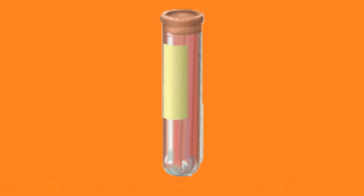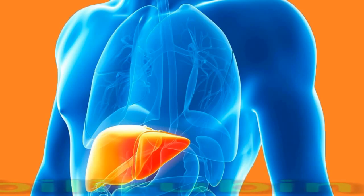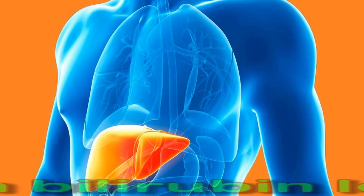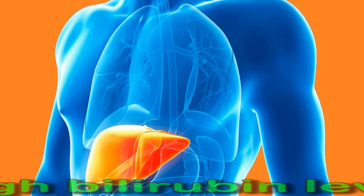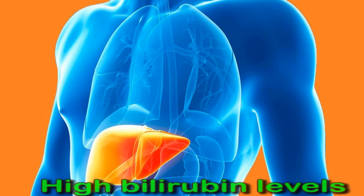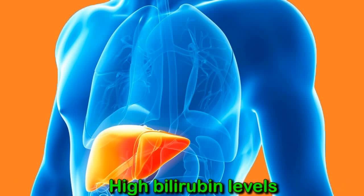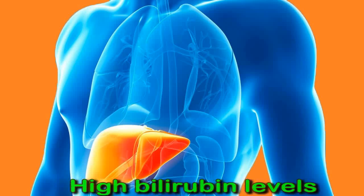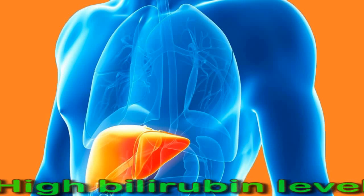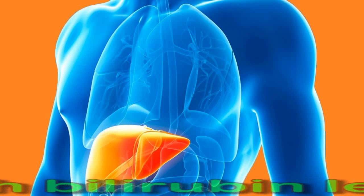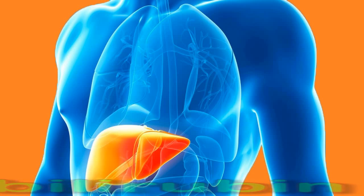A high level of bilirubin in the blood is known as hyperbilirubinemia. High bilirubin levels can cause jaundice, which makes the skin and the whites of the eyes appear yellow due to the brown and yellow bilirubin in the blood. There are several reasons for a rise in bilirubin levels outside the newborn period. This cause can occur before, during, or after the production of bilirubin.